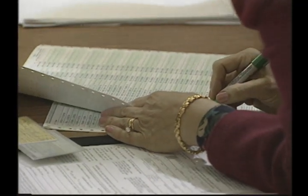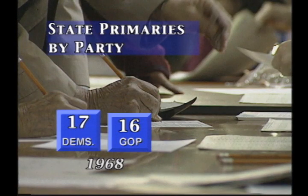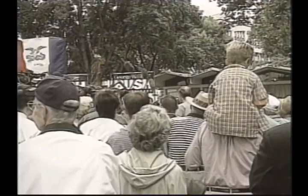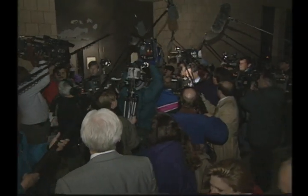The reforms prompted new state laws, many of which reformed the Republican nominating process as well. Since these reforms, the number of states holding open primaries instead of closed caucuses has skyrocketed. In 1968, there were 17 Democratic and 16 Republican primaries. But this year, 40 states will hold Democratic primaries and 43 will hold Republican primaries. As states struggle for influence in the nominating process, the primary season has been truncated — the majority of both parties' convention delegates will have been selected by March 7th, five full months before the national party conventions.